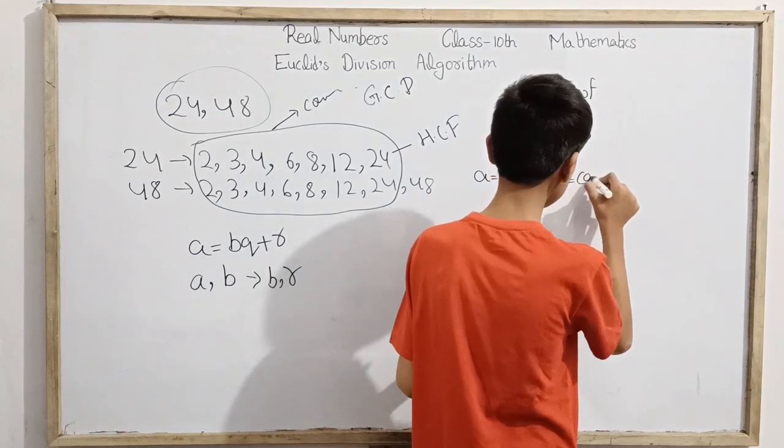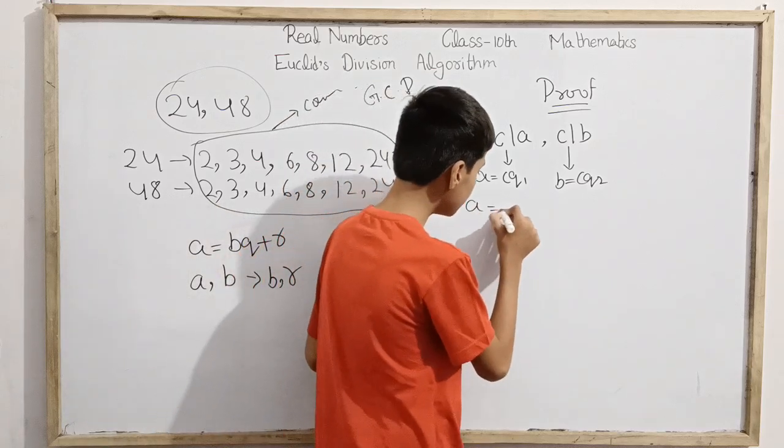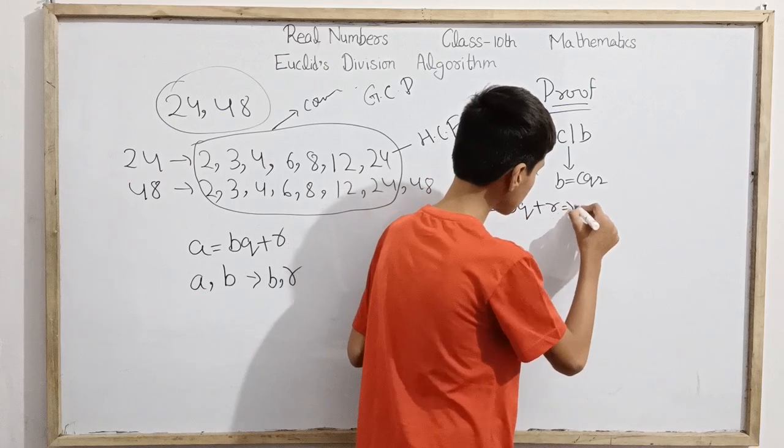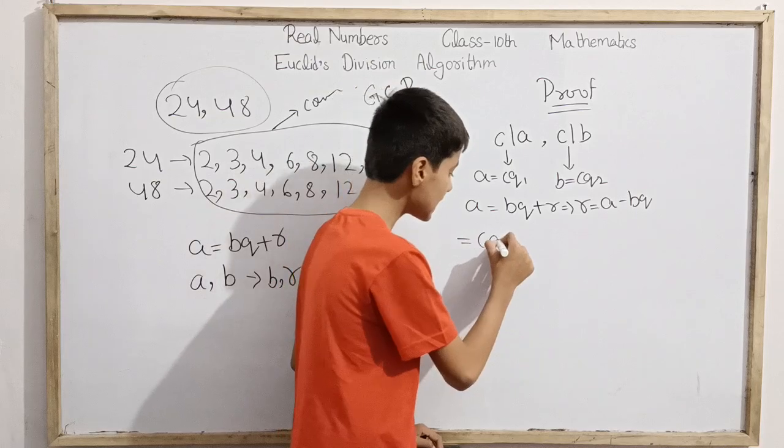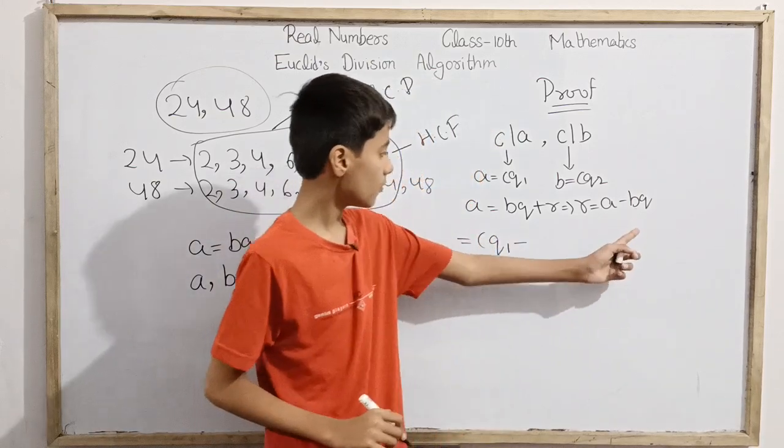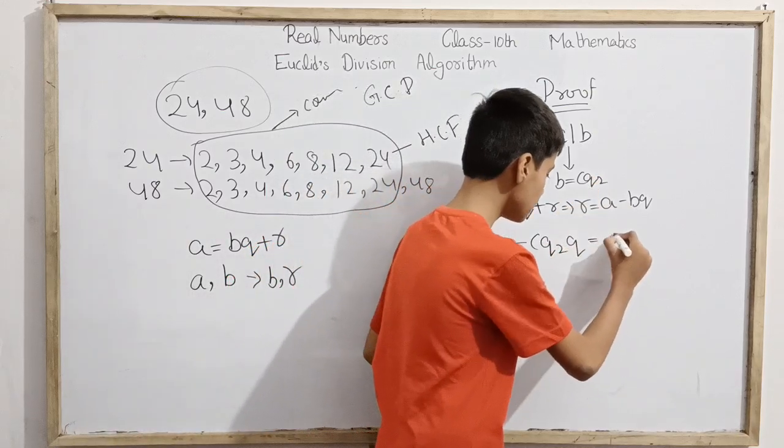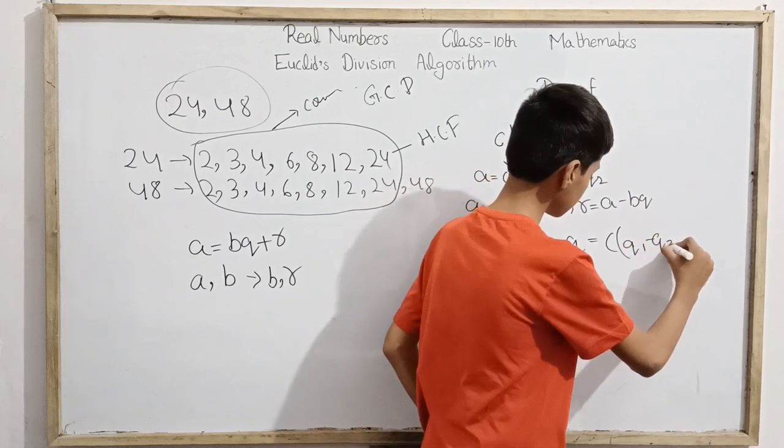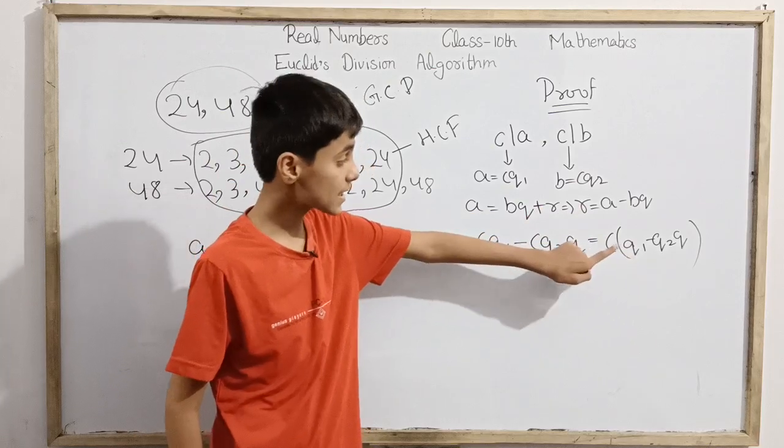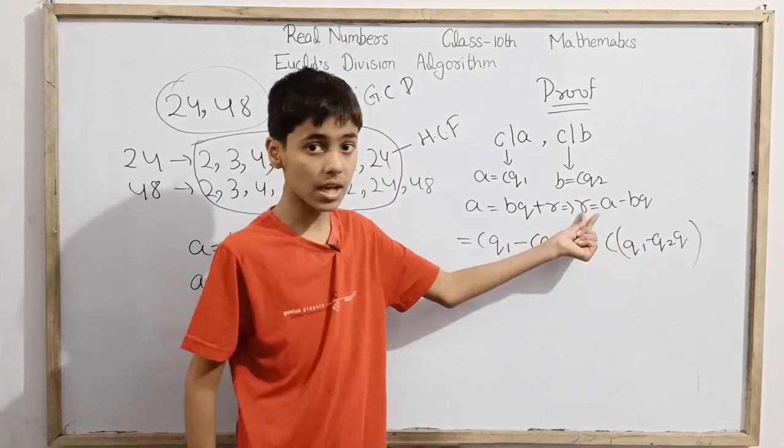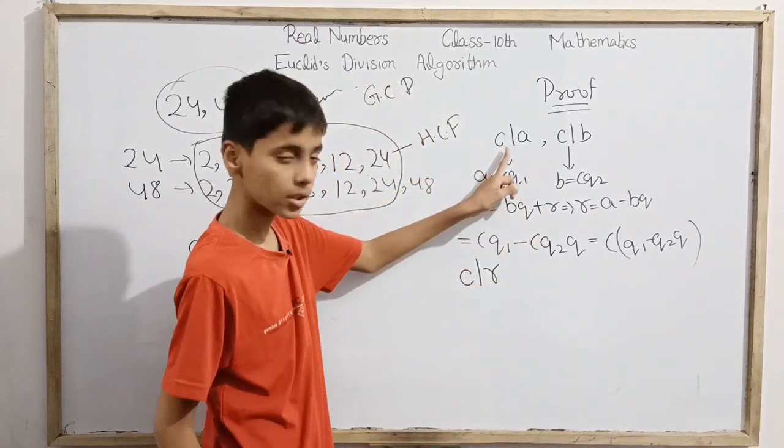Since a = bq + r, I can also say r = a - bq. Substituting, r = cq1 - cq2q, which equals c(q1 - q2q). This means if I multiply c by this number, I get r. So somehow c also divides r.